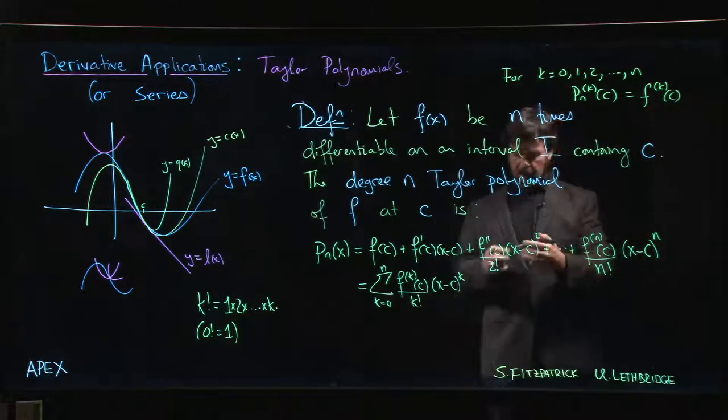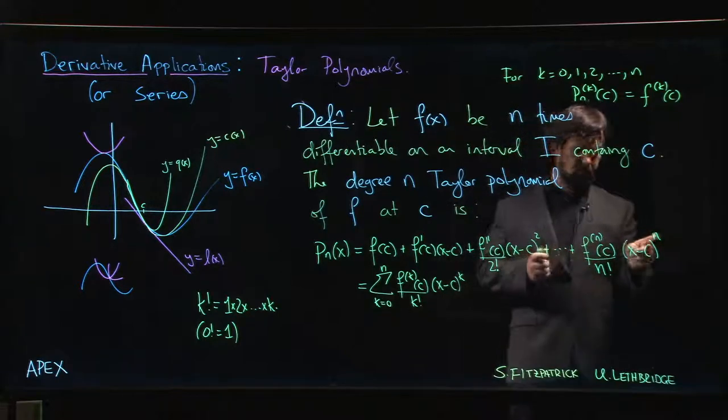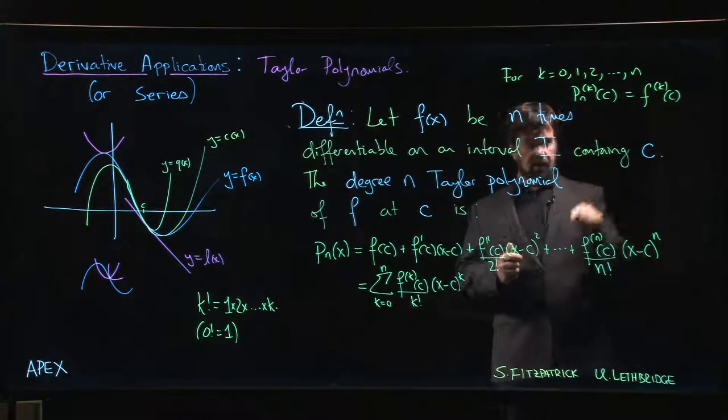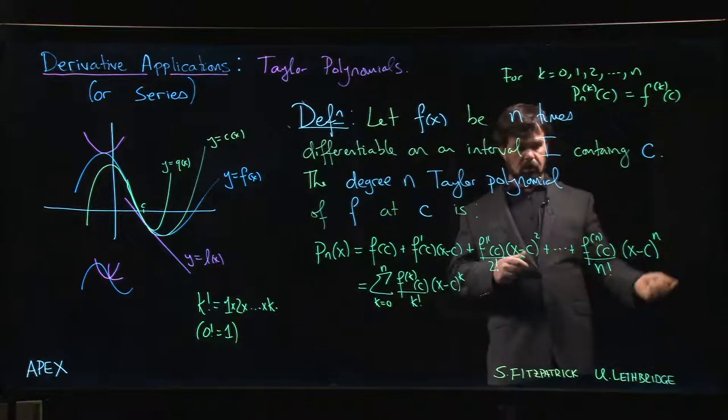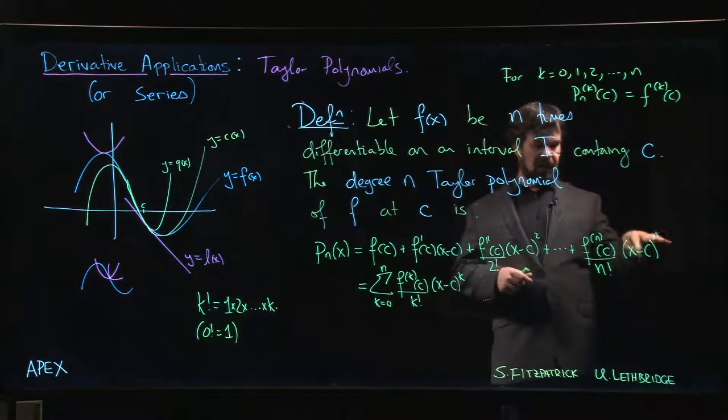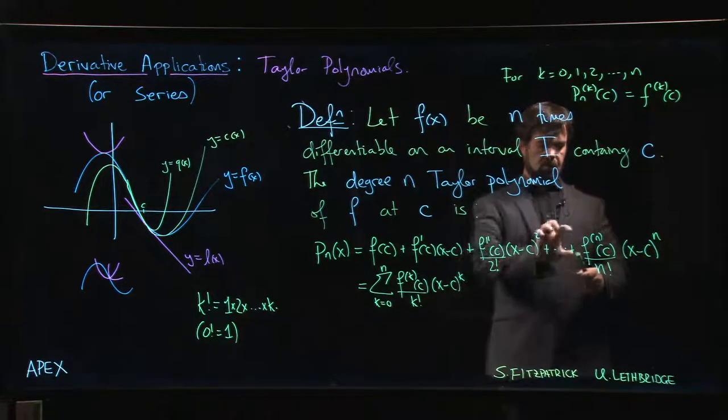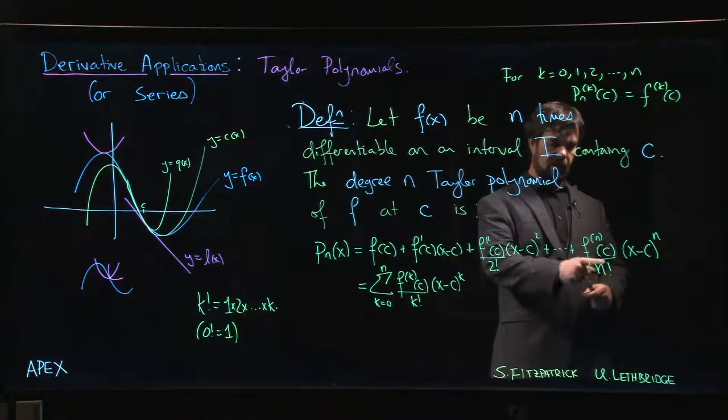The reason you have these factorials is that as you take derivatives using the power rule, the first time you take the derivative n comes down in front, then n-1, then n-2, and so on until you've taken n derivatives. At that point you've got an n factorial out front that cancels with the n factorial here, leaves you with the nth derivative at c.